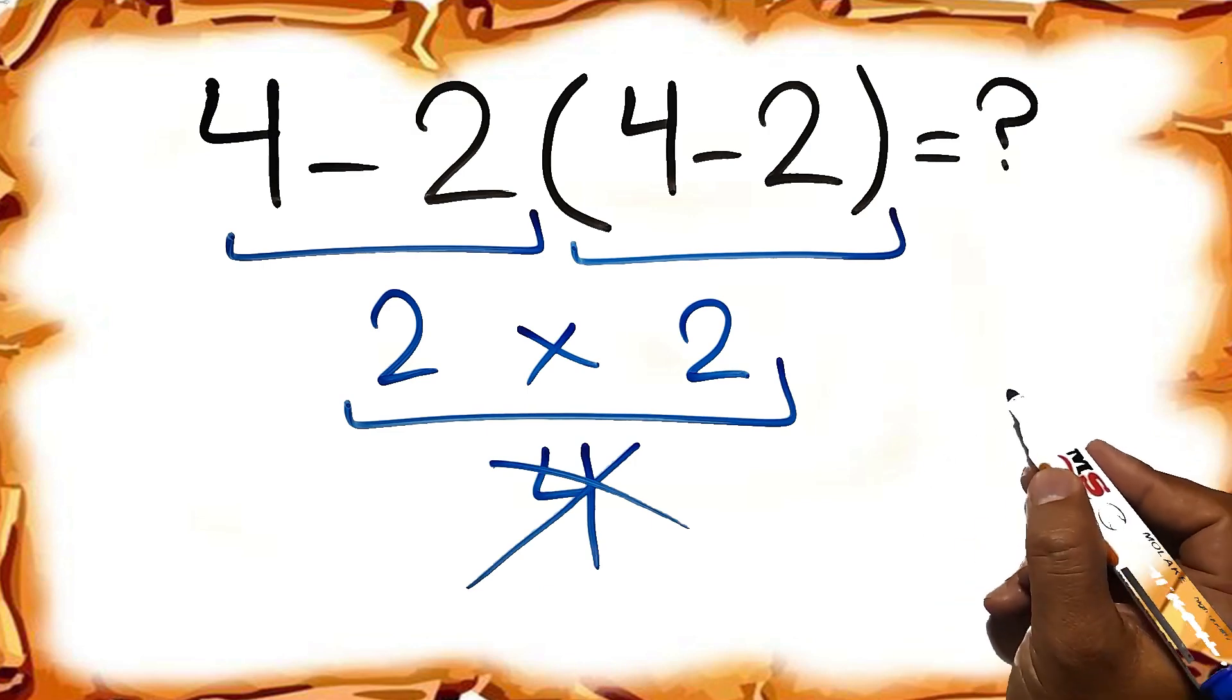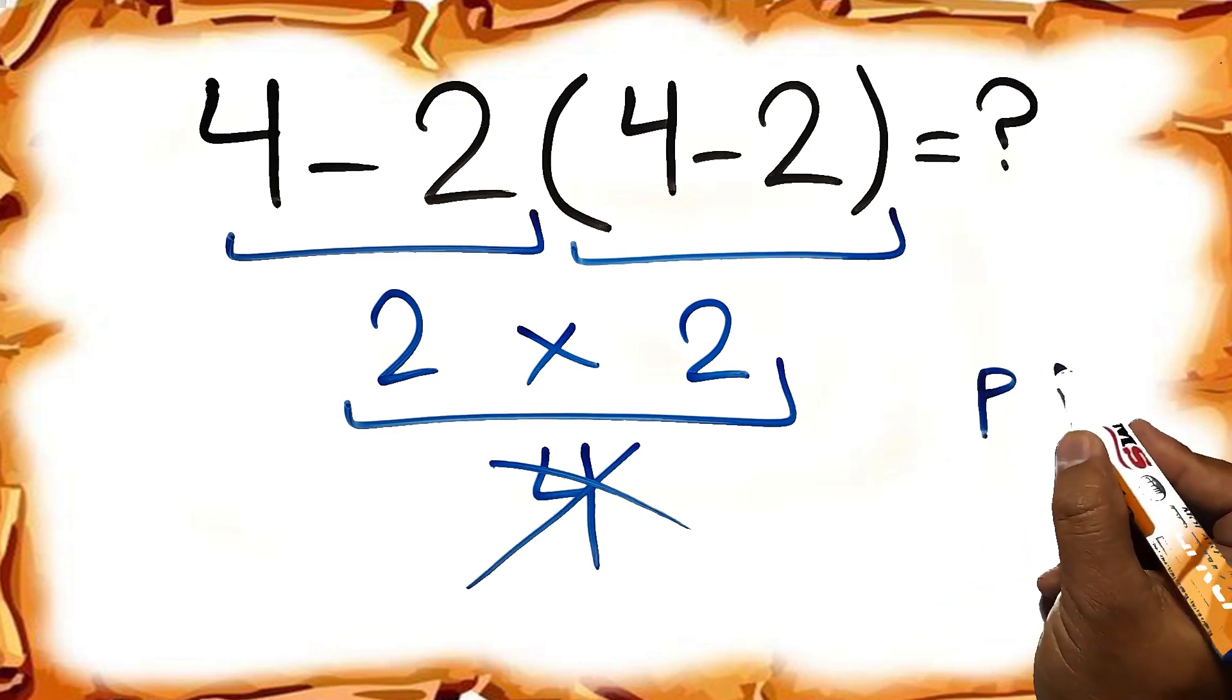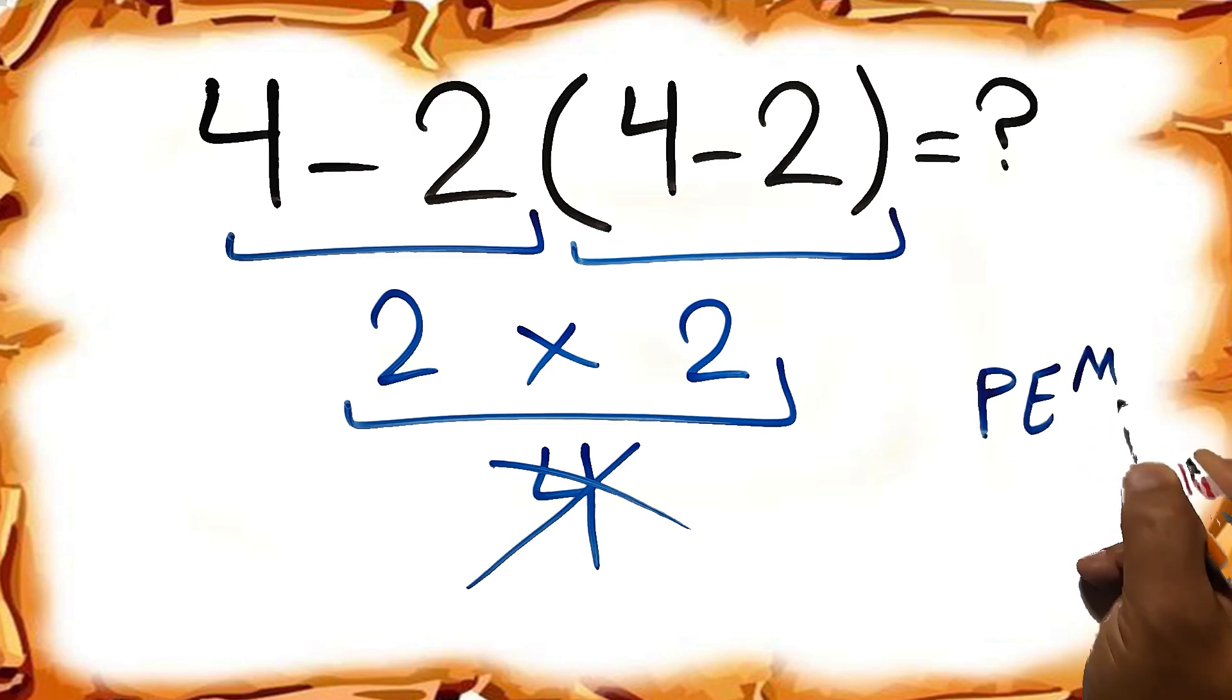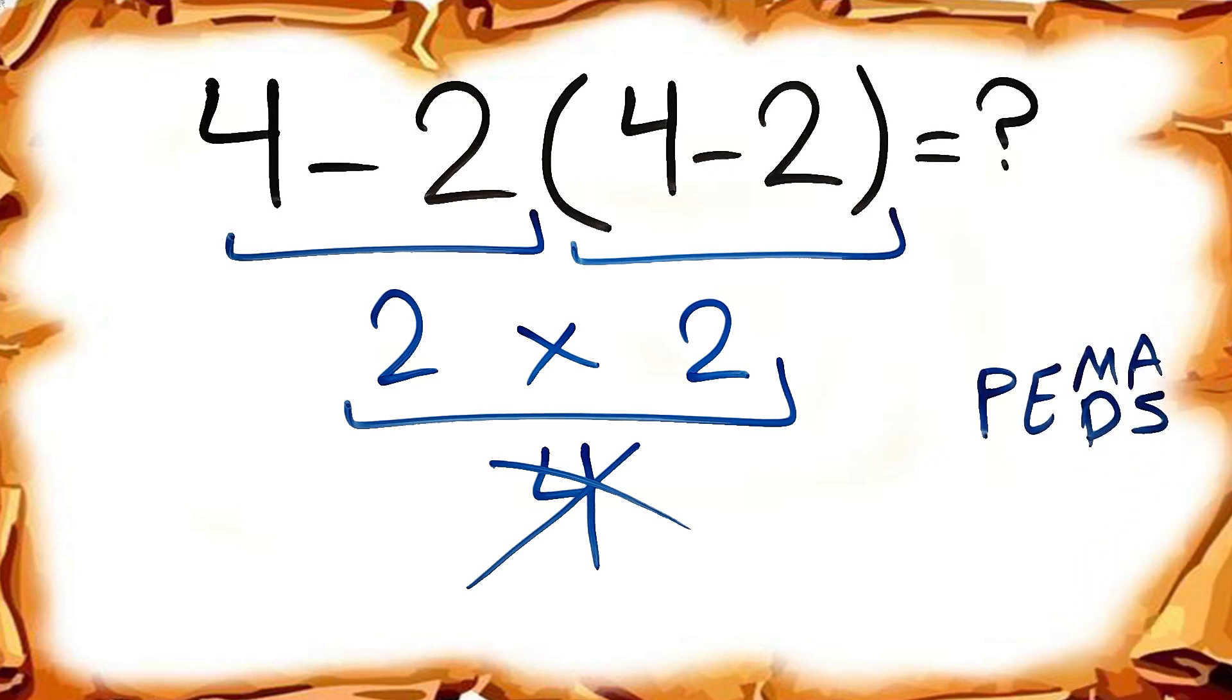Because according to the order of operations, first we have to do parentheses, then exponents, then multiplication or division, and finally addition or subtraction. Remember that multiplication and division have equal priority and we have to go from left to right. And the same applies to addition and subtraction.